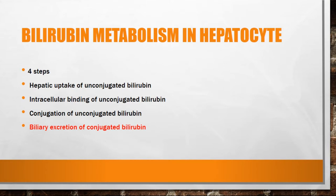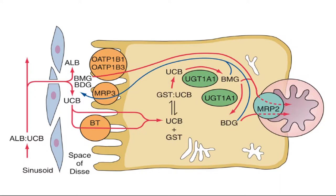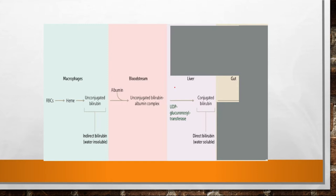The next step is biliary excretion of conjugated bilirubin. Bilirubin monoglucuronide and bilirubin diglucuronide are taken out from the hepatocyte into the bile canaliculus by a protein called MRP2, which is multidrug resistance-associated protein 2. This protein is responsible for passing conjugated bilirubin into the bile canaliculus, which then reaches the small intestine via the ampulla of Vater.